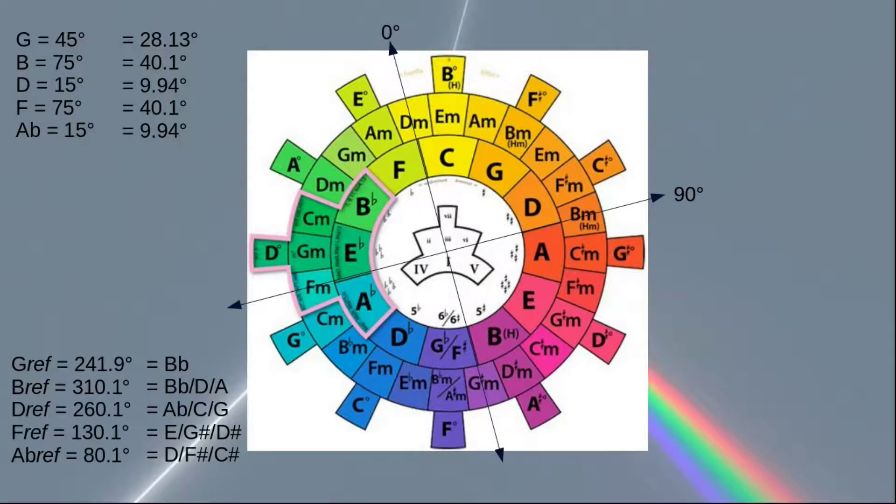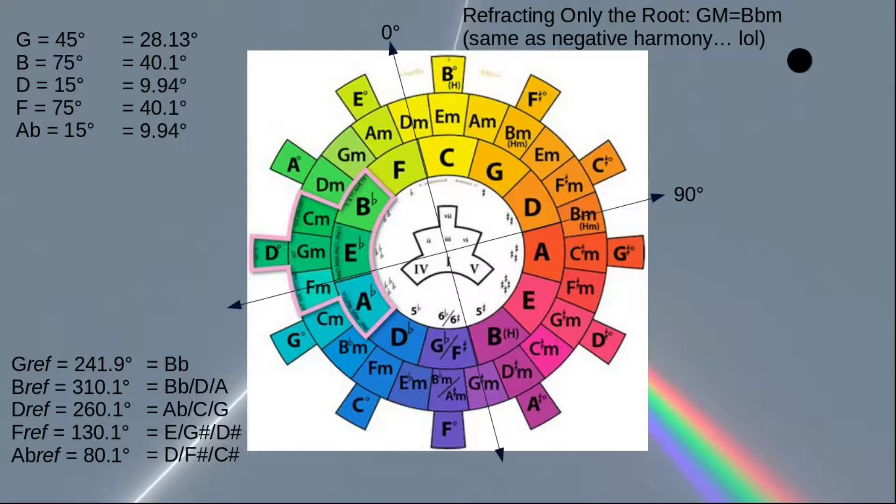One thing that kind of blew my mind is that if we only refract the root of the chord, we go from the orangish G major to the blue B minor, which is the same result you would get in negative harmony, but on a totally different spot of the wheel. So it shows that negative harmony is really strong, and that there's a lot of internal symmetry in the circle of fifths that we don't always see.